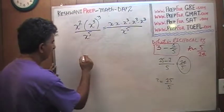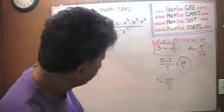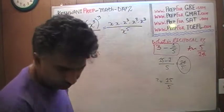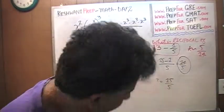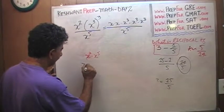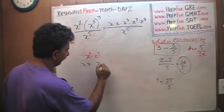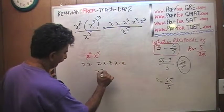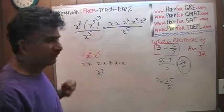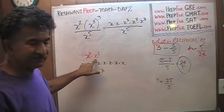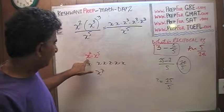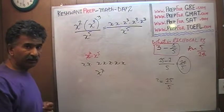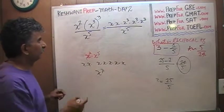Let's put that on top. x squared is x times x, and x cubed times x cubed times x cubed over x to the fifth. How much is x squared times x to the fifth? x squared means x times x, and x to the fifth means x times x times x times x times x — so we have seven x's. The rule is that we add the exponents when quantities are being multiplied, as long as the base is the same.